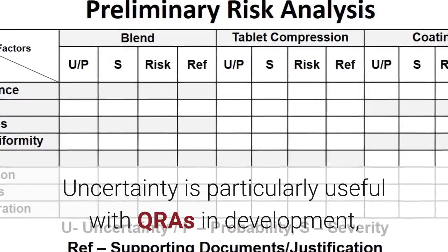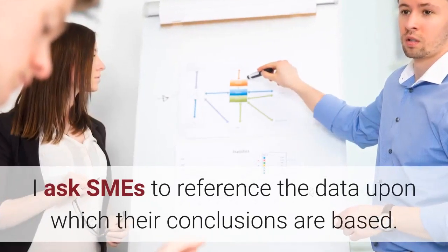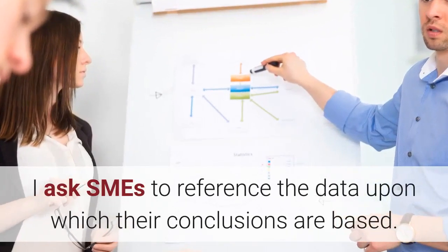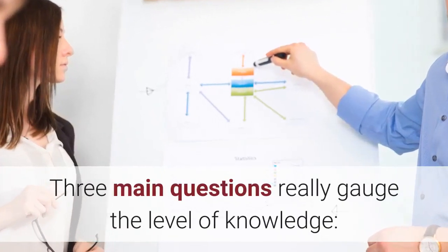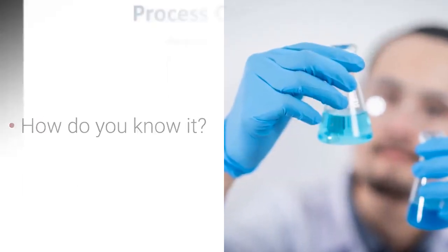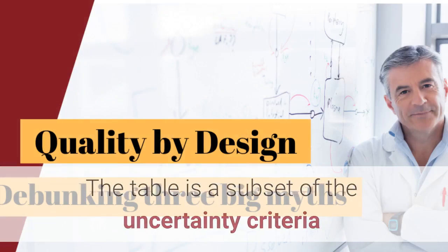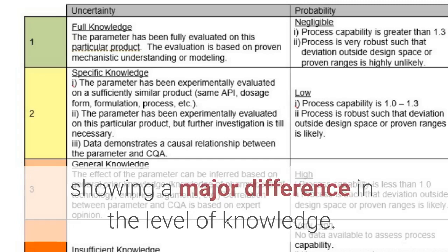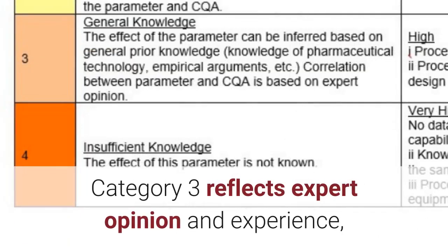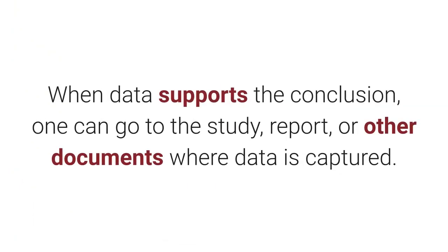Uncertainty is particularly useful with QRAs in development, which work with limited data sets. I ask SMEs to reference the data upon which their conclusions are based. Three main questions really gauge the level of knowledge: What do you know? How do you know it? How good are you? Category 3 reflects expert opinion and experience, while Category 2 indicates experimental data supports the conclusion. When data supports the conclusion, one can go to the study report or other documents where data is captured.